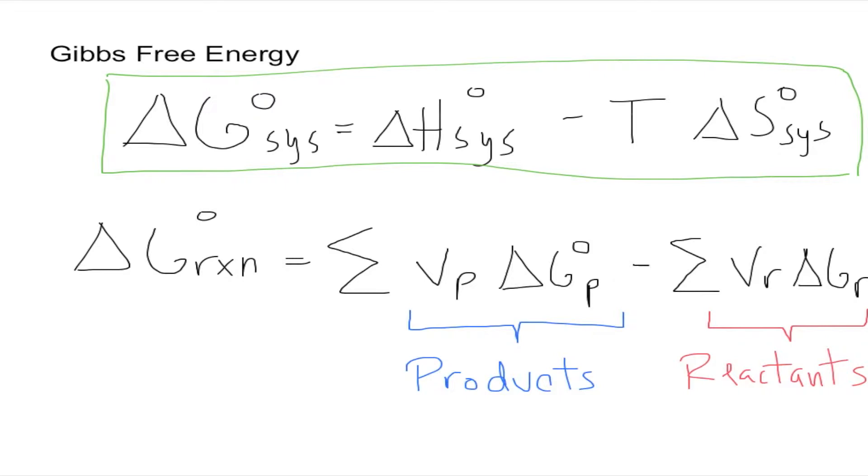Now, not in every problem are you going to be able to obtain Delta H and Delta S for all the reactants and products, but you can still find the Delta G for the system if you have other things.